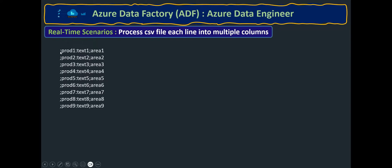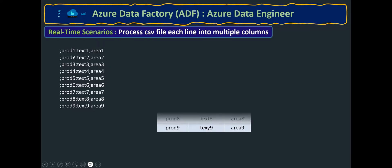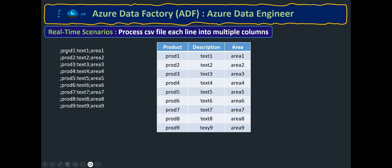If you observe the input data, each line starts with a semicolon, then we have some data like product one, product two, then a colon, then text one, then colon, and then area. So this is the input CSV data. We need to divide this so that product information comes under a product column, description under a description column, and area under an area column.